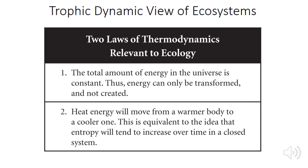The first law of thermodynamics states that the total amount of energy in the universe is constant — energy can only be transformed, not created. Plants transform solar energy into plant biomass, herbivores transform plant biomass into herbivore biomass, and carnivores transform herbivore biomass into carnivore biomass. As we move up trophic scales, no new energy can enter the system except through sunlight being converted to plant biomass, so energy available inevitably decreases at higher trophic levels.